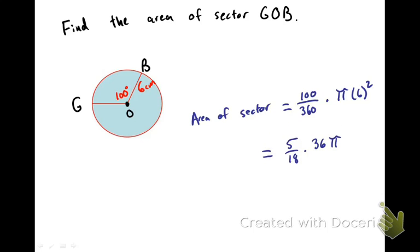We're going to reduce the fraction and square the 6. And we're going to divide 18 to 36, 2 times 5 is 10 pi centimeters squared. So this would be a typical answer for an area of a sector problem, and you should expect a fraction or a pi in your answer.